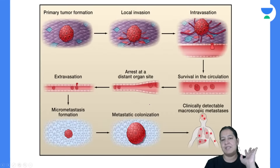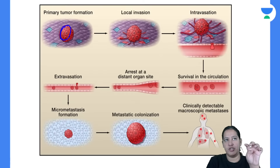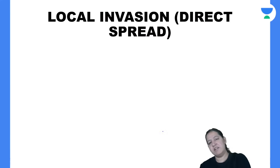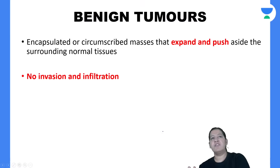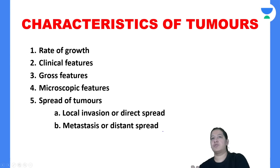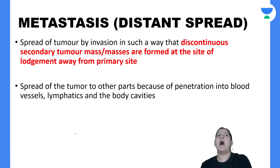There are three routes of metastasis: lymphatic route, hematogenous route (via blood), and transcelomic route (via body cavities). Carcinomas prefer the lymphatic route; sarcomas prefer the hematogenous route — remember the mnemonic CLSH: Carcinoma-Lymphatic, Sarcoma-Hematogenous. Transcelomic is a rare route but can occur.